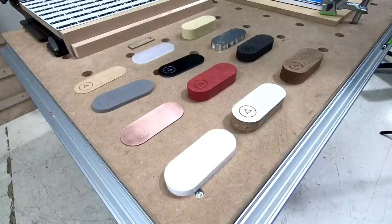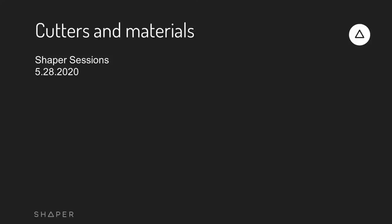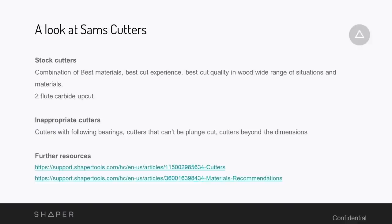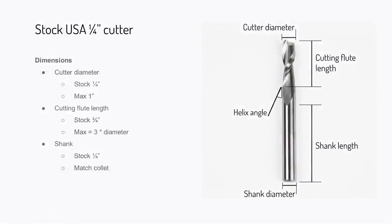But we've still got a huge range of things we can cut. The stock cutters we ship with are carbide and they're two-flute upcut square end mills. The quarter-inch one — this is for North America; Europe gets a different set of cutters — the stock one is a quarter-inch shank. That's the stock collet that ships with Origin. Any cutter with a quarter-inch shank will work just fine in Origin, so long as you take into account those limitations we mentioned at the beginning.